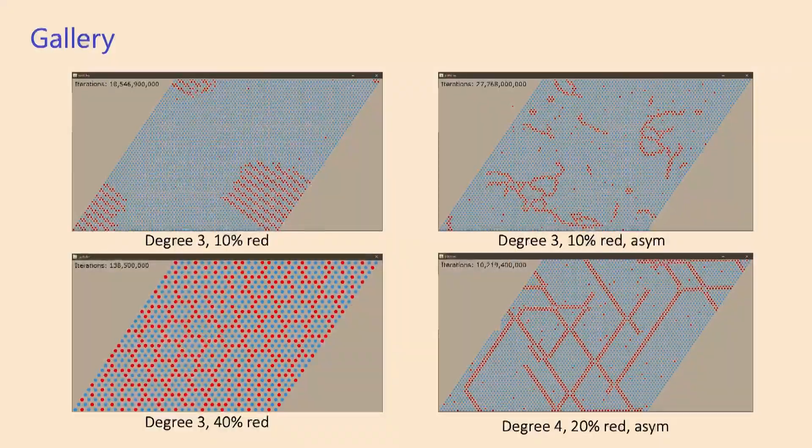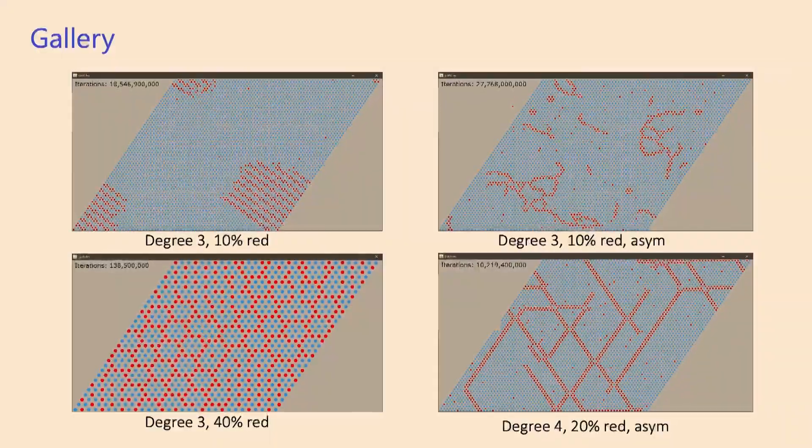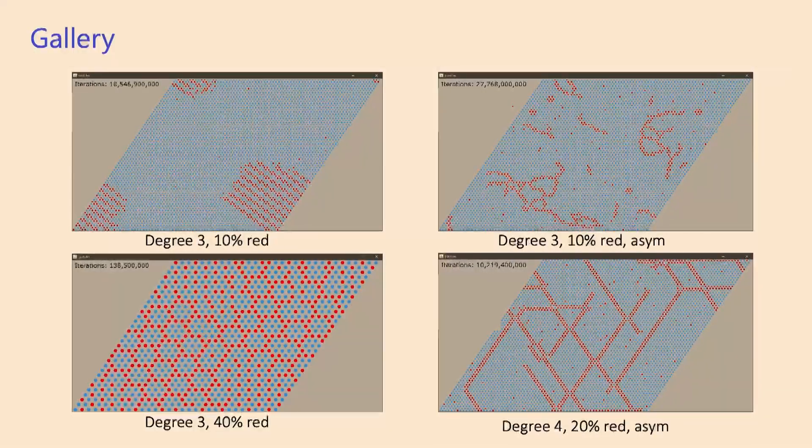On the right, we have an asymmetric case. So on the right, I'm showing you two examples where red is reacting to red, but blue is not reacting to blue. And so you get different patterns.